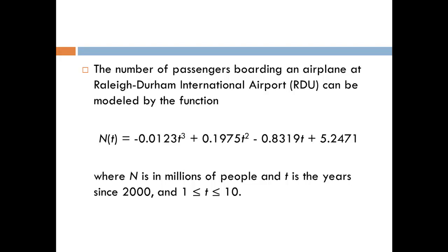Where N is in millions of people and t is the year since 2000, and t is between 1 and 10. So let's look at some of the rates of change of this function using Excel.